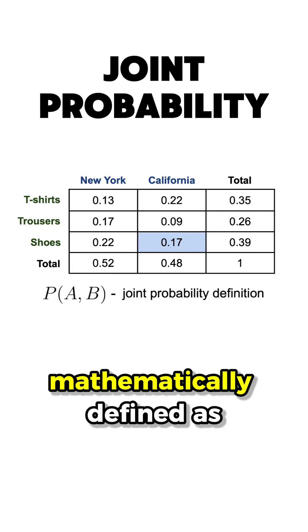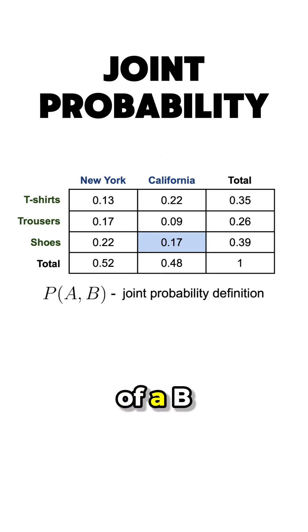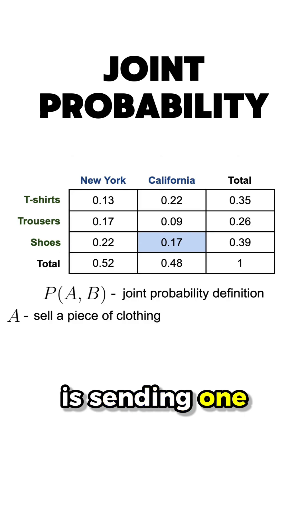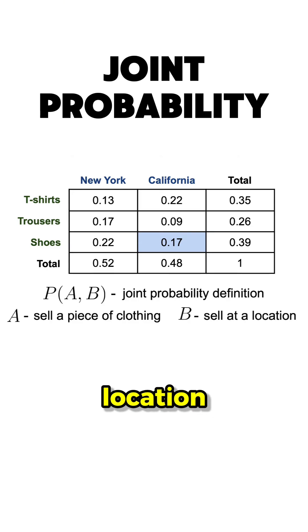And all of these events are mathematically defined as P(A,B), where A is the first event, which in our case is selling one of the pieces of clothing, and B is the second event, which is selling at a certain location.